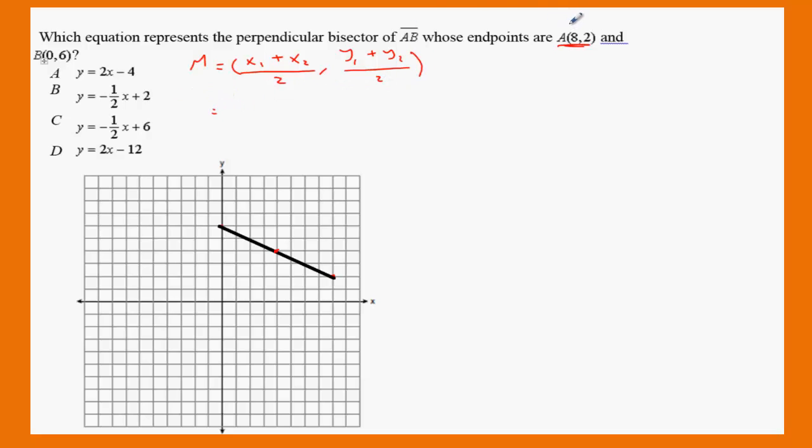y1 plus y2 over 2. x1, this is x1, this is y1. This is x2, and this is y2. x1 plus x2, that is 8 plus 0 over 2, 2 plus 6 over 2, that's going to be 8 plus 0 over 2, that is 4. And 8 over 2 is 4. And that's exactly the same thing we have here.